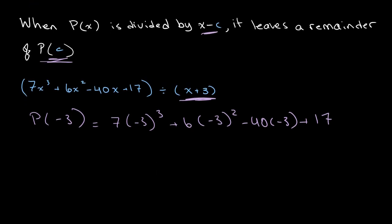Let's calculate this. We get 7 times -27 plus 6 times 9 plus 40 times 3 plus 17.